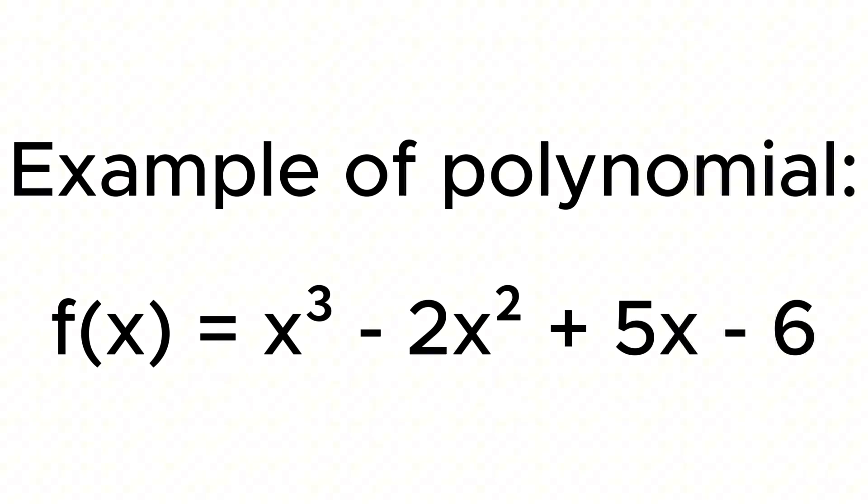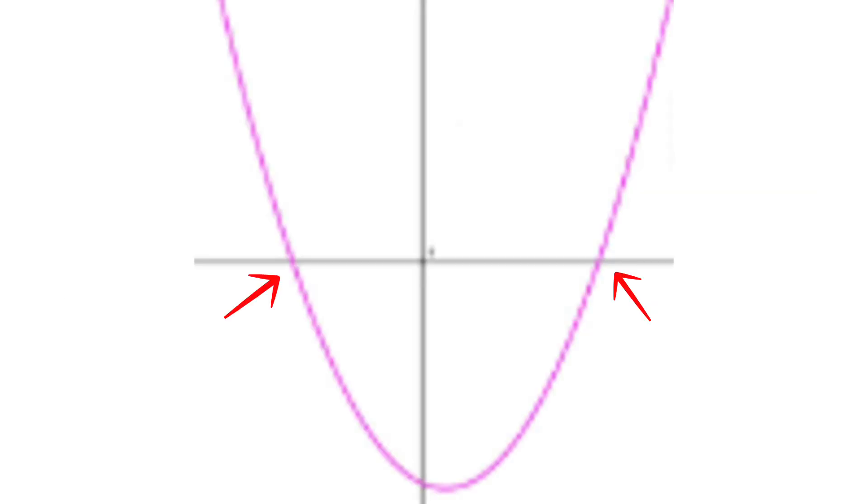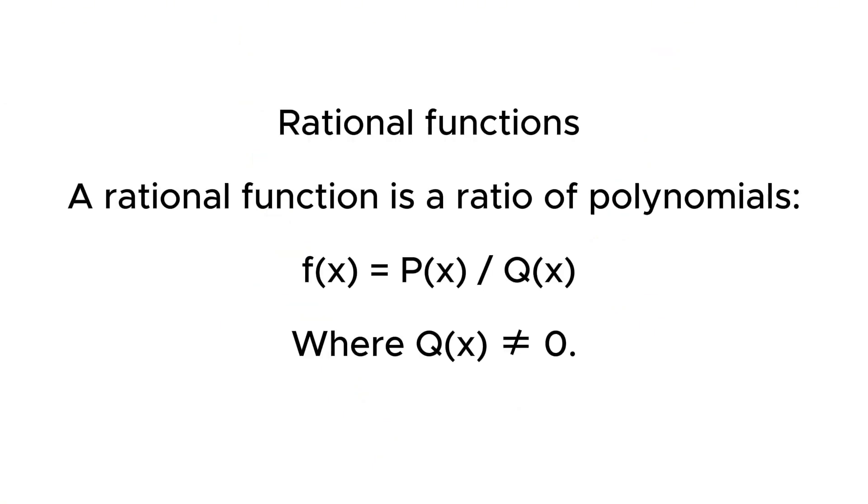Zeros or roots are where the graph crosses the x-axis. Even degrees, the ends go same direction; odd, they go opposite. You factor polynomials to find those x-intercepts.